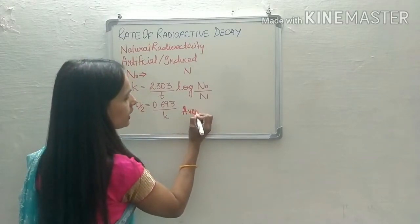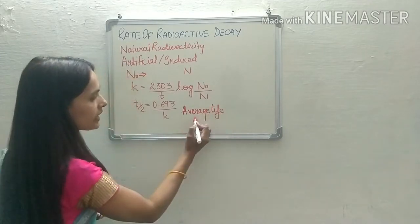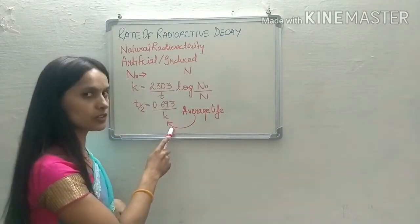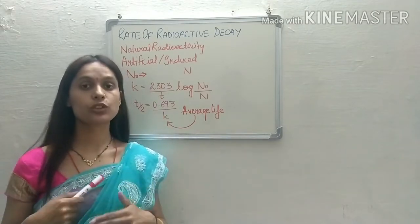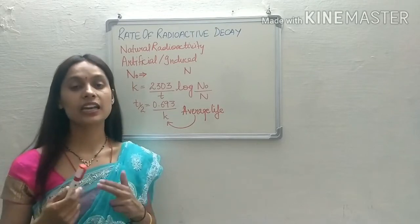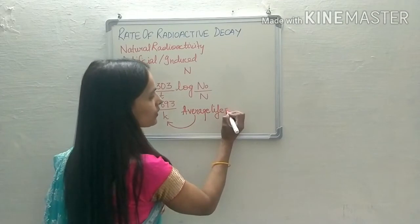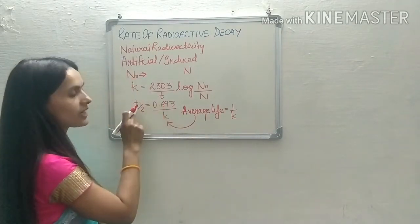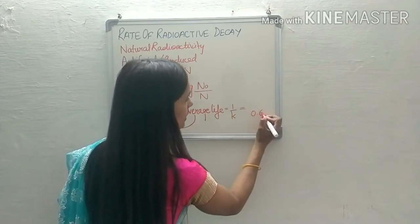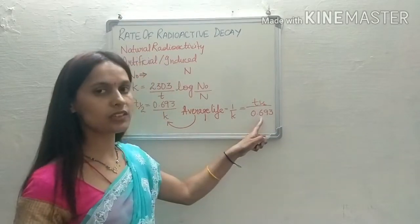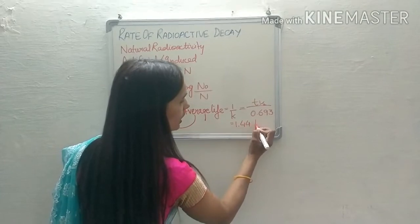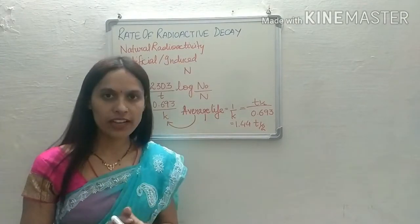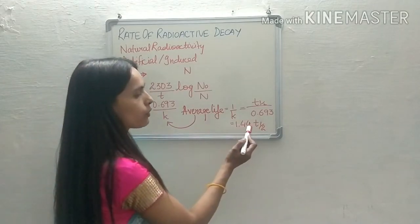The average life of radioactive decay depends on the rate constant. Average life and K are inversely related to each other. The equation is: average life = 1/K. Since K = 0.693/t-half, substituting gives average life = t-half/0.693 = 1.44 × t-half. So we first find the half life, then the average life equals 1.44 times t-half.